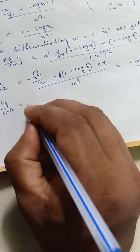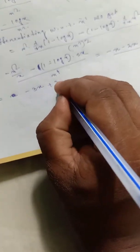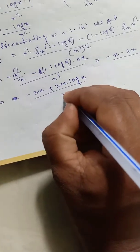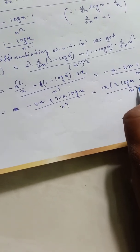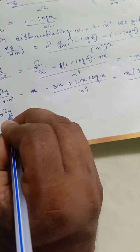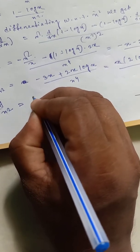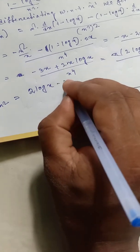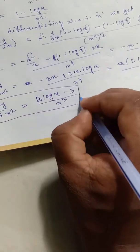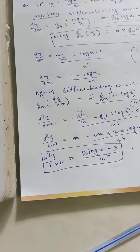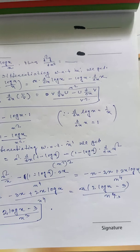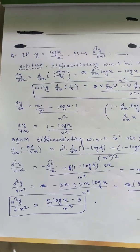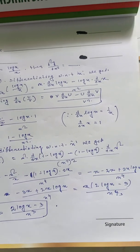Taking x common from the numerator: x times (2 log x minus 3) divided by x to the fourth. Cancelling x, we get 2 log x minus 3 divided by x cubed. Therefore, d square y by dx square is equal to 2 log x minus 3 divided by x cube.